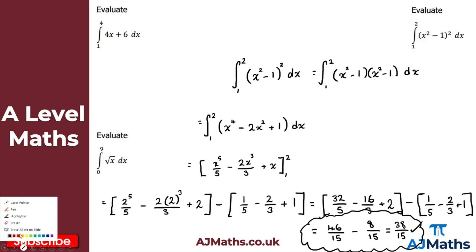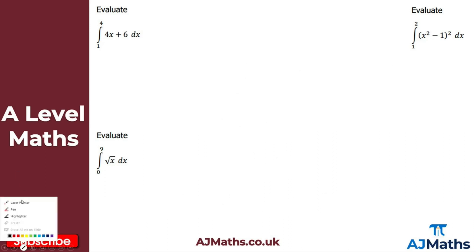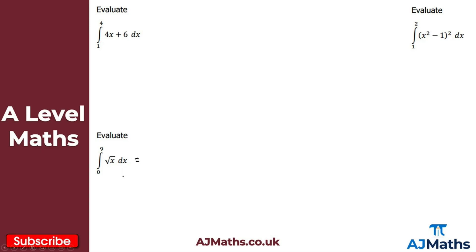Let's clear the screen for the last question. We're asked to evaluate the square root of x from 0 to 9 with respect to x — this one's actually quite nice. The first step is to rewrite the square root as a power. The square root of x is just x to the power of a half. So we're integrating x to the power of a half from 0 to 9 with respect to x.